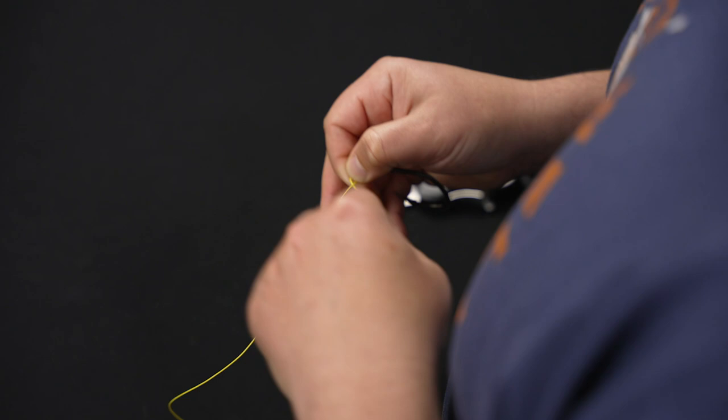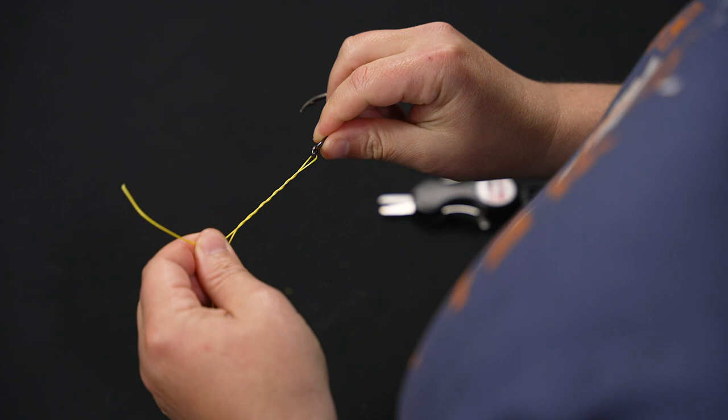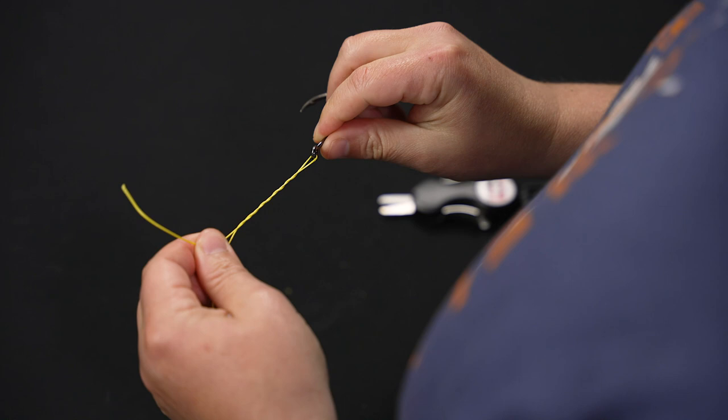So there's two, three, four, five. Now once you've done those wraps you've created a small loop at the bottom of the knot and you're going to want to run the tag end through that loop on the bottom of the knot.